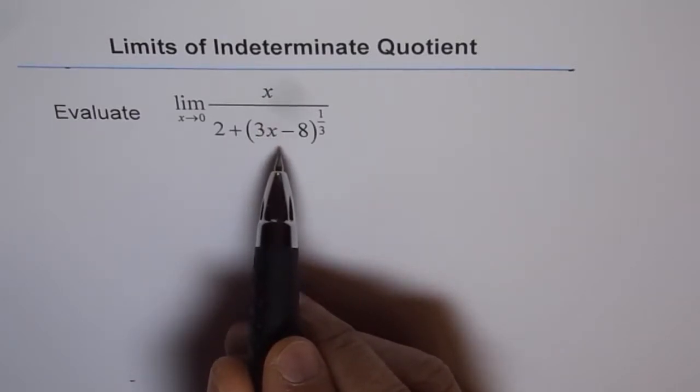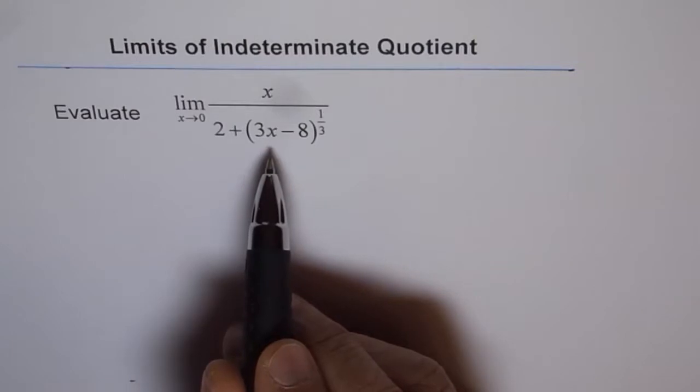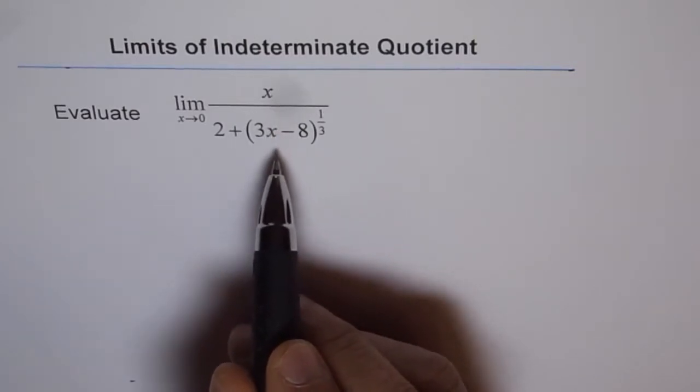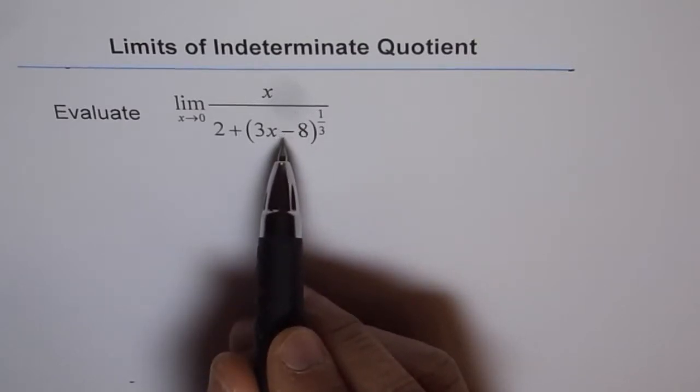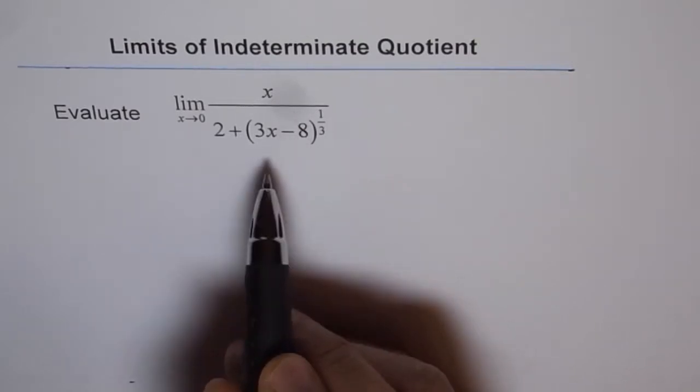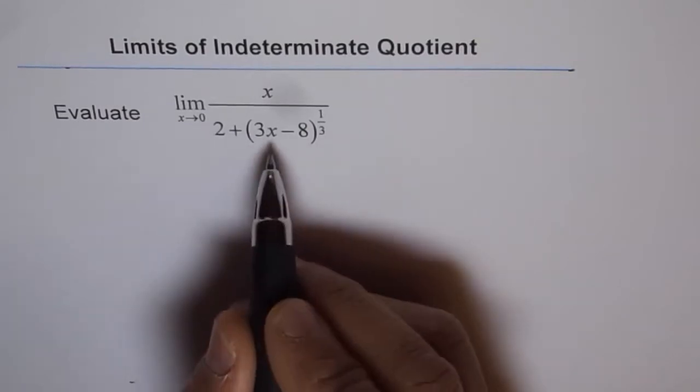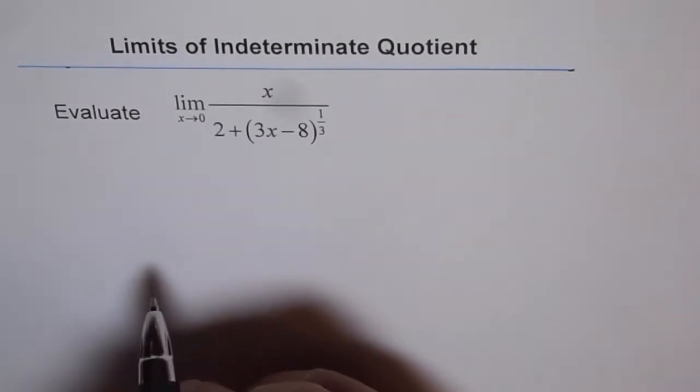Now to solve limit problem with 0 over 0 form, what we need to do is rationalize it or factor it or apply substitution of variable. So best approach here is to use substitution of variable.